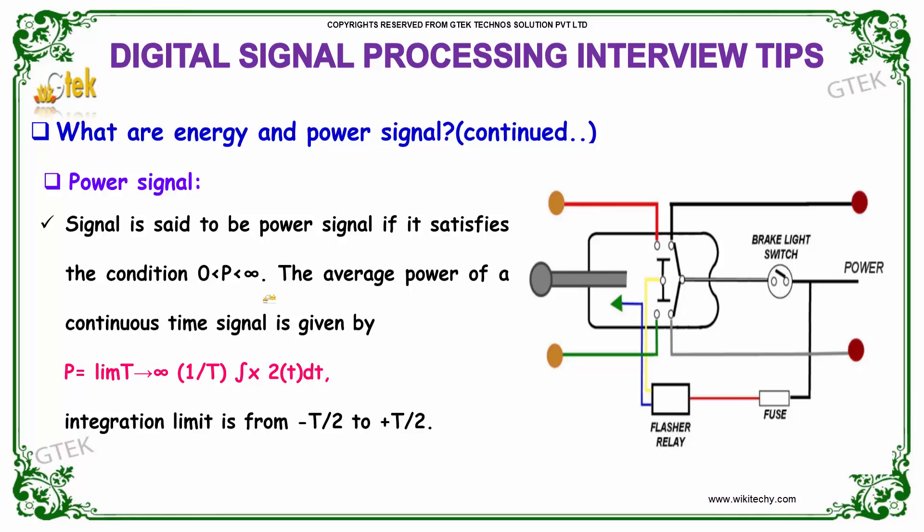The average power of the continuous time signal is given by P equals to limit t tends to infinity 1 divided by t integral of x squared t dt. Integration limit is from minus t by 2 to plus t by 2.